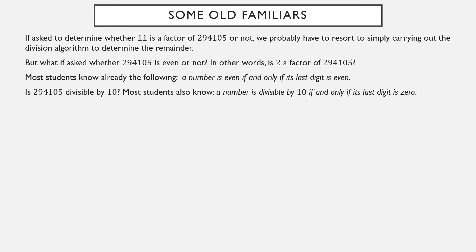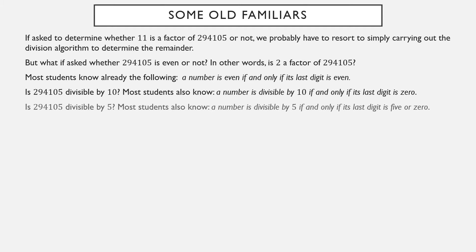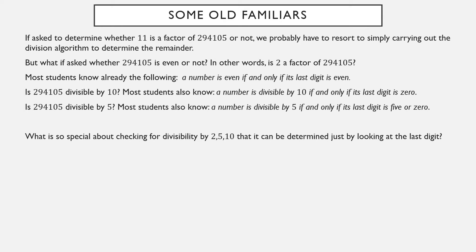What if I ask, is 294,105 divisible by 10? You probably know a number is divisible by 10 if and only if its last digit is 0. Is 294,105 divisible by 5? You probably also know a number is divisible by 5 if and only if its last digit is either 5 or 0. But what's so special about checking divisibility by 2, 5, and 10 — that the only thing you need to do is look at the last digit?